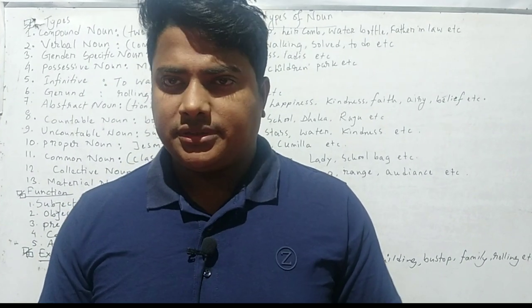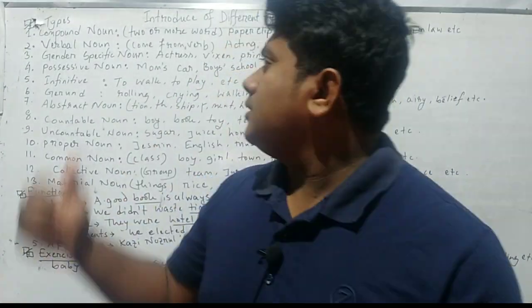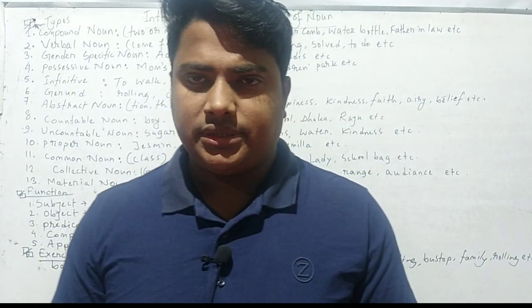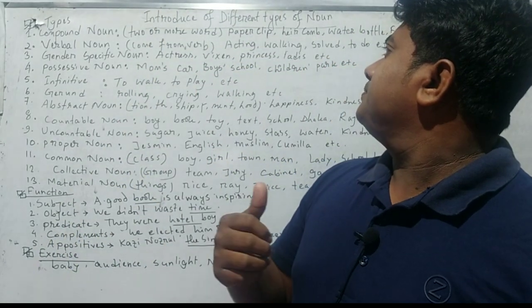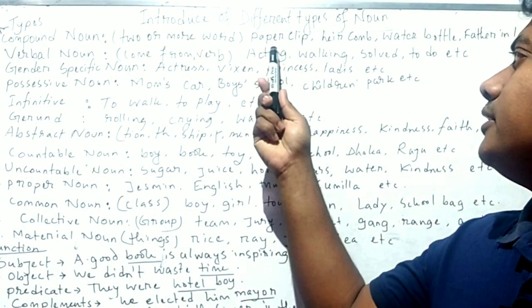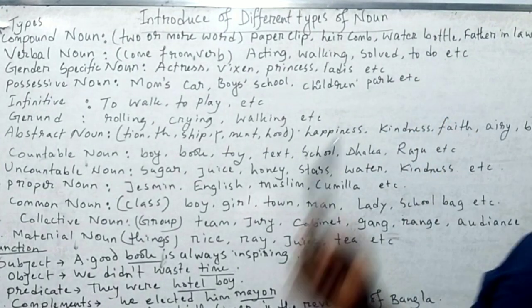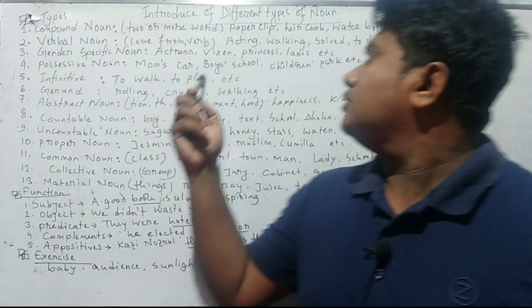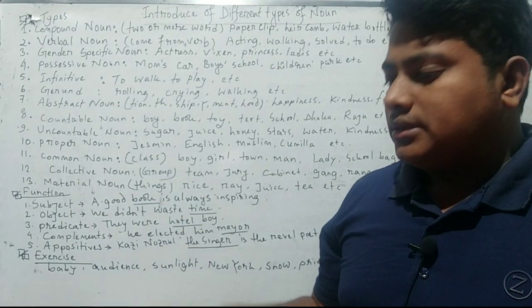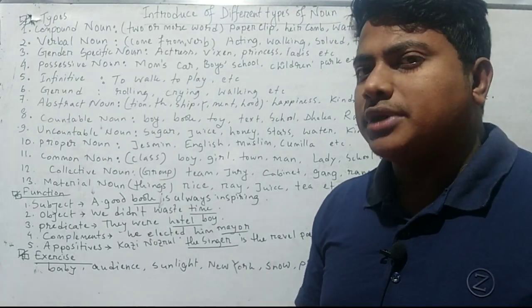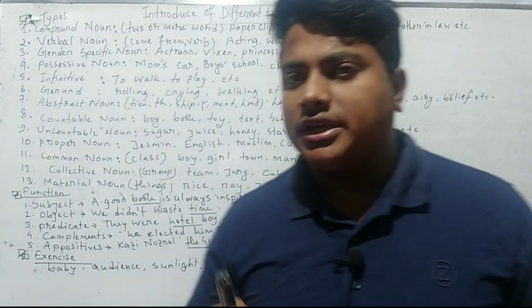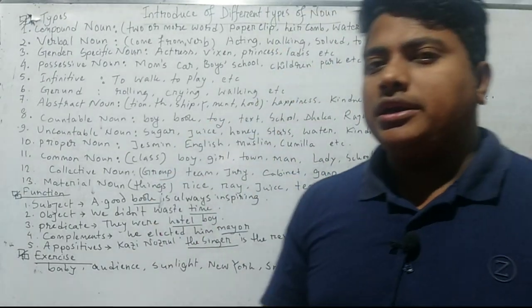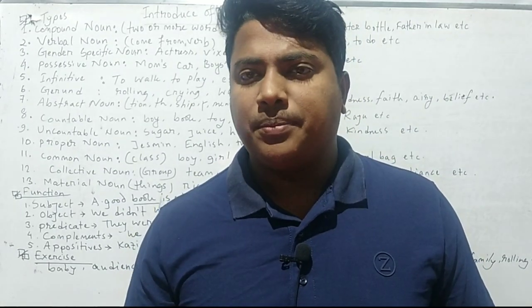First, let's look at compound nouns. Compound means one or more words put together, such as 'paper clip.' Here you see paper clip, hair comb, water bottle, and father-in-law — all made by two or three words. This type of noun expresses one meaning. For example, 'paper' means the material we write on, and 'clip' means to hold or attach something — together, 'paper clip' means a clip that can attach paper.